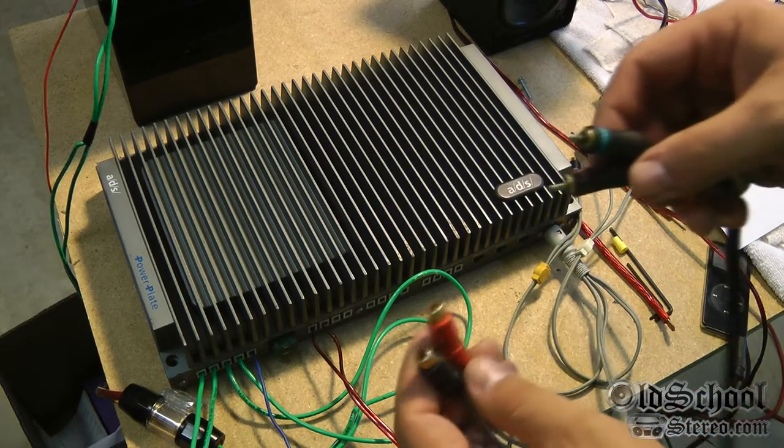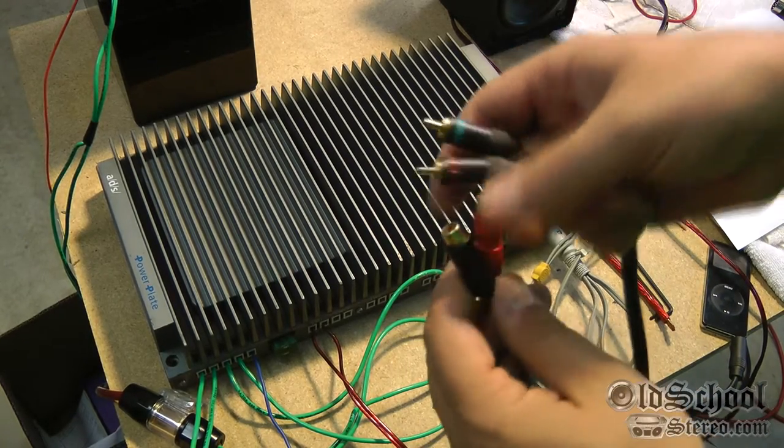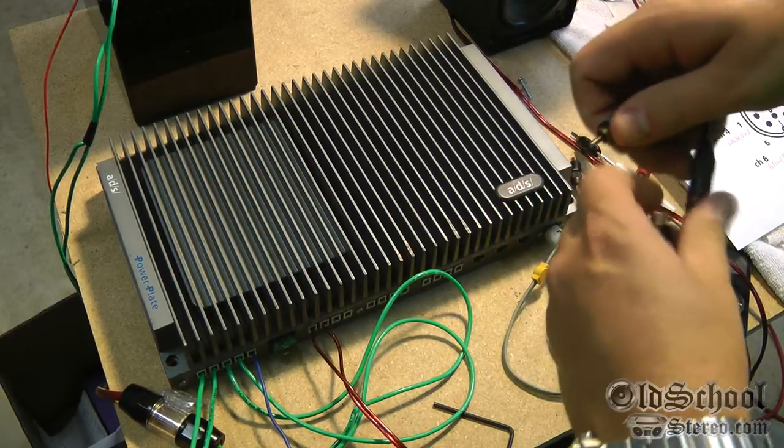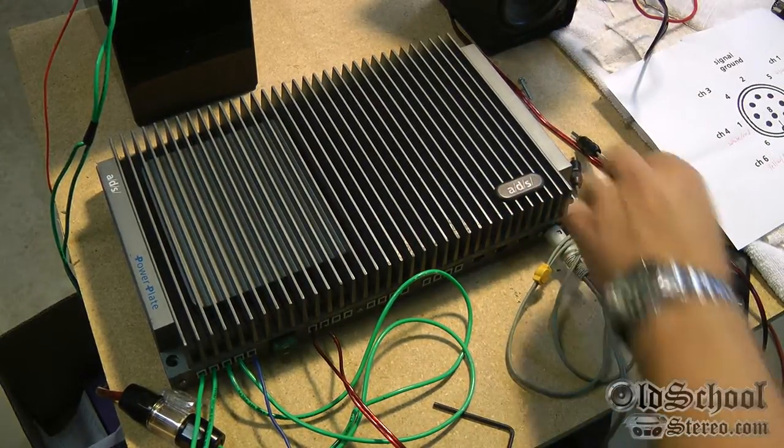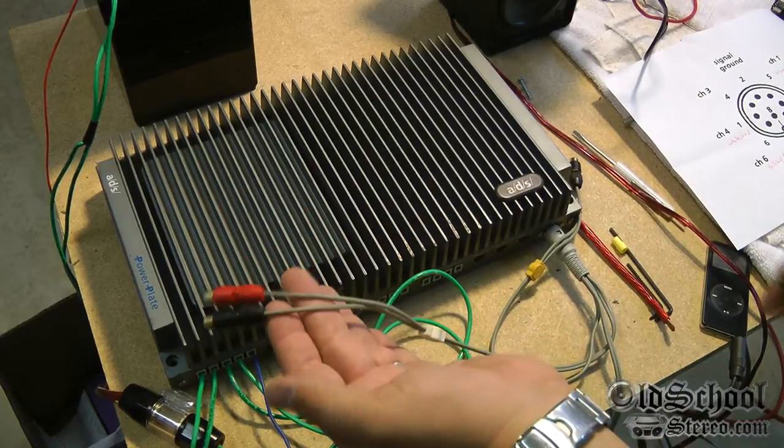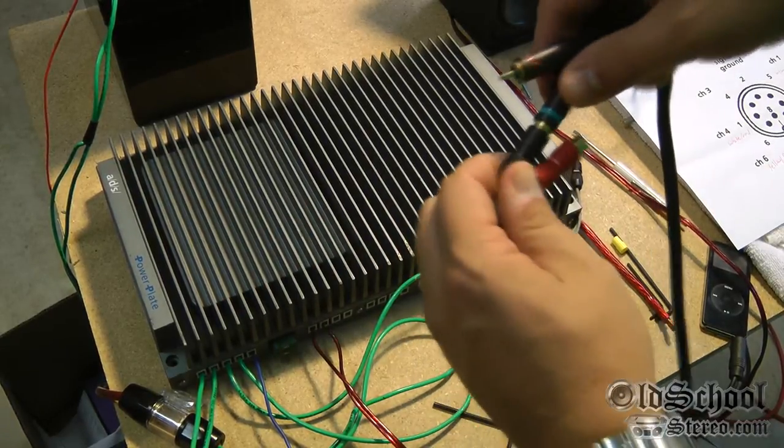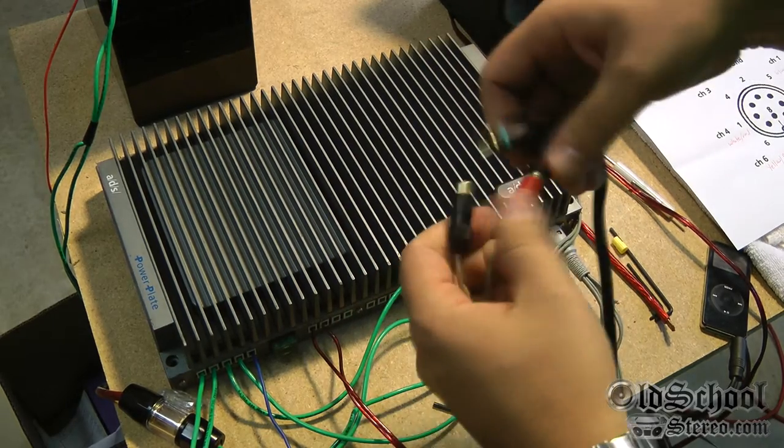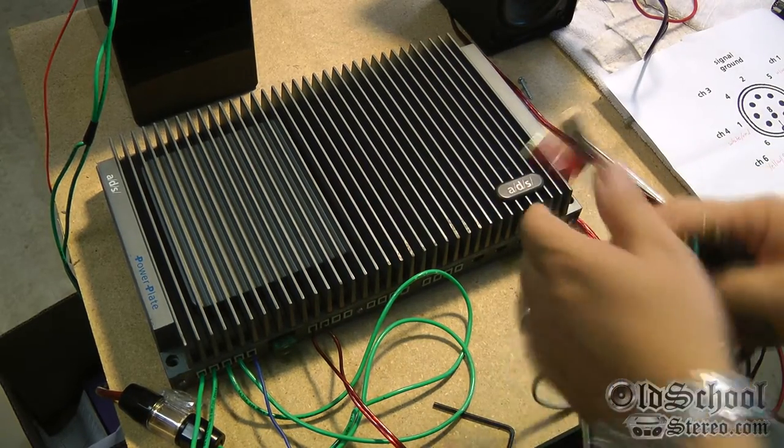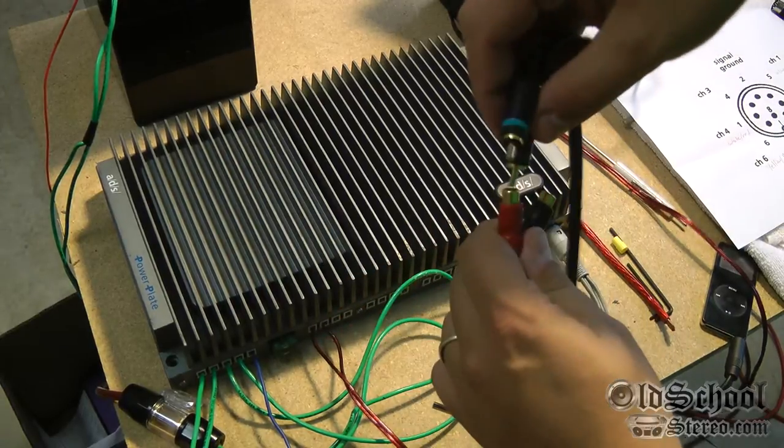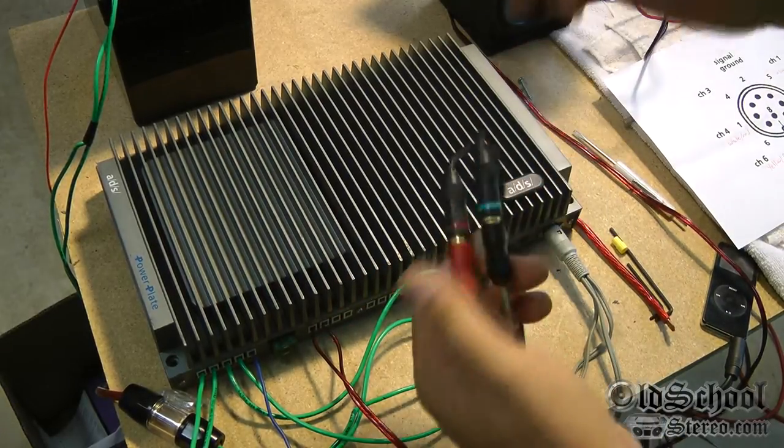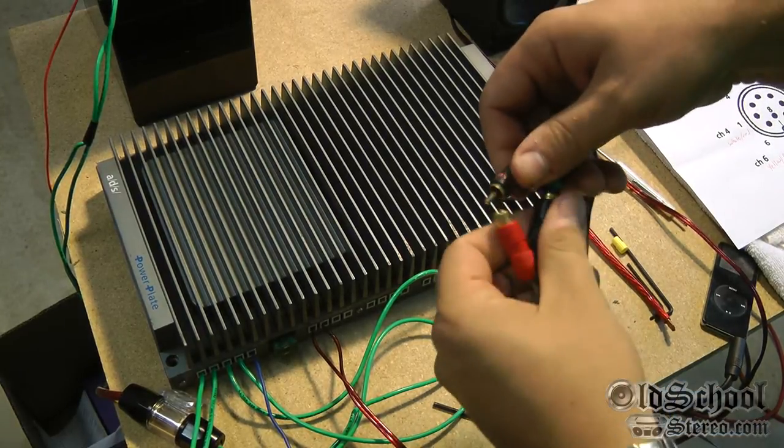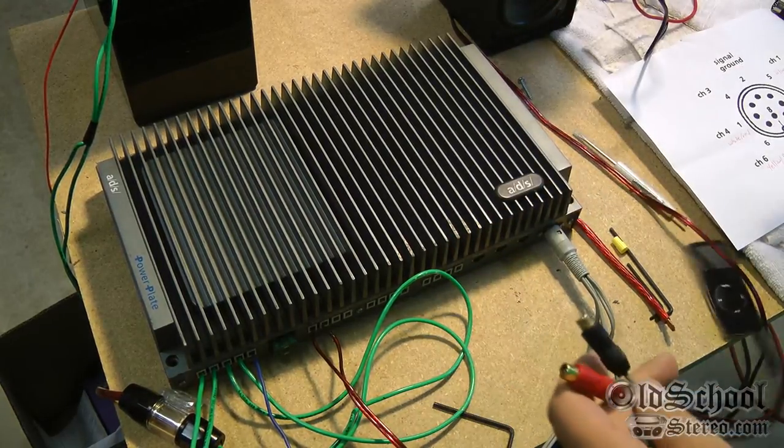So we're going to go through the channels here. This is the blue, see if that gets anything out of channel one - nothing there. Then we'll try the white, this one's got white on it, going into both jacks - still got nothing. And we'll go to yellow - I'm getting nothing out of channel one.